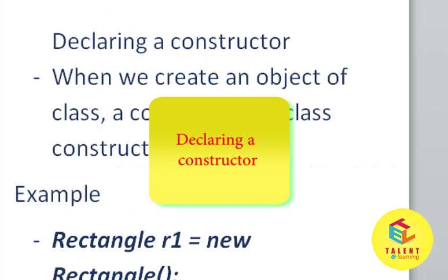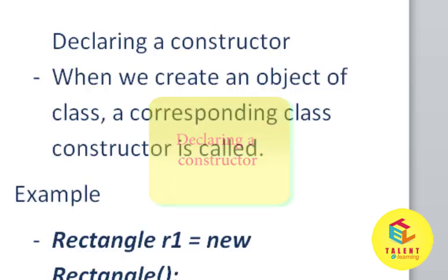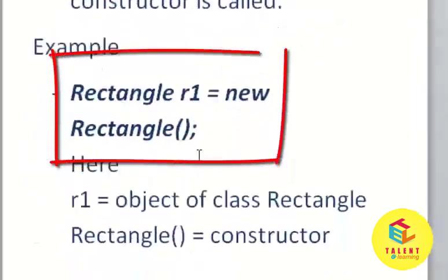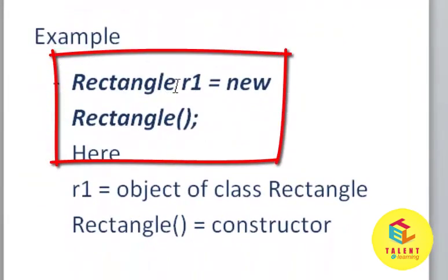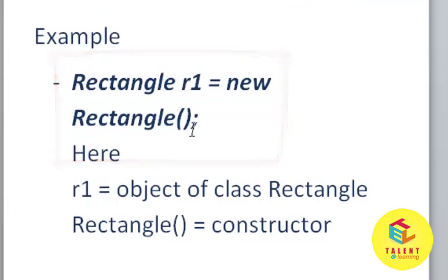How to declare a constructor? When we create an object of class, a corresponding class constructor is called. Here is the example. Rectangle is a class name, r1 is object name, and this Rectangle which is followed by the parenthesis is the constructor.